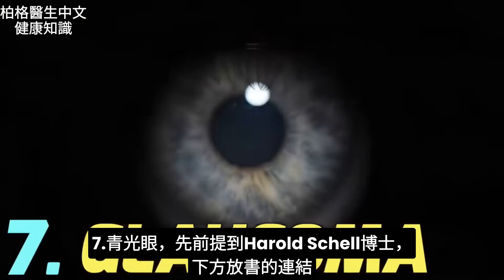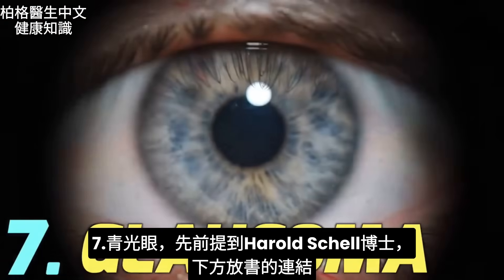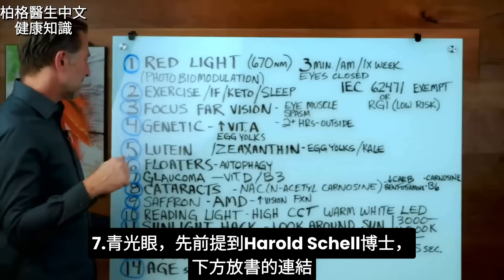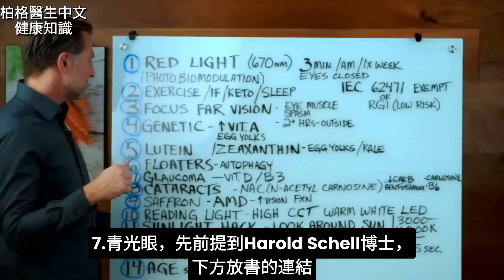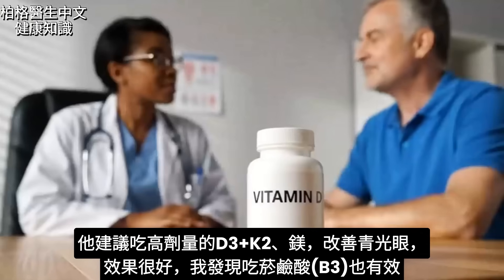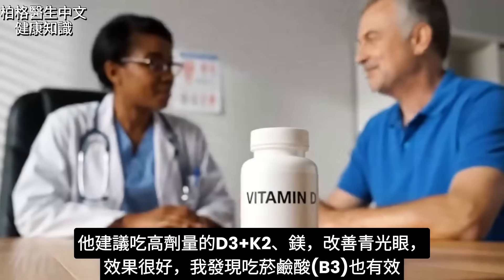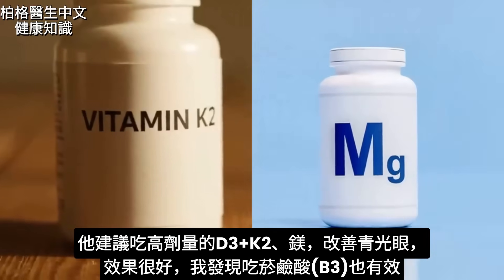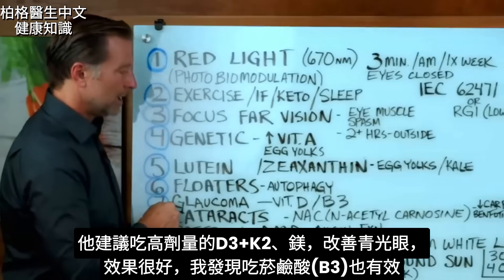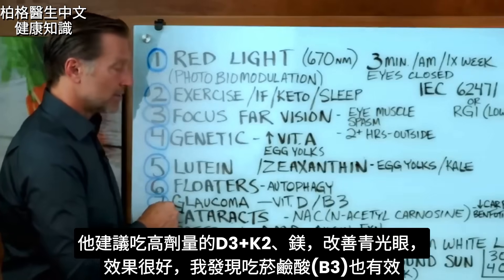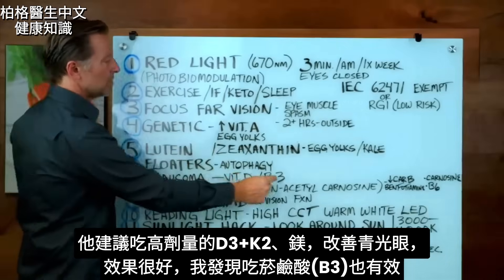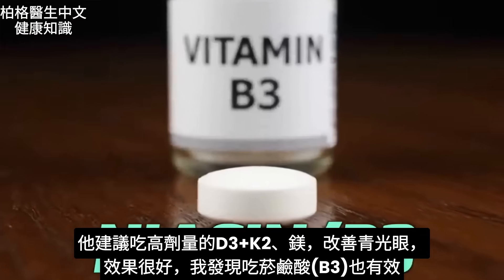Number seven: I did touch on glaucoma with Dr. Harold Schell. He recommends taking higher doses of vitamin D3 with K2 and magnesium to help get rid of glaucoma, and he gets great results. I have also found some research on taking niacin for this as well.